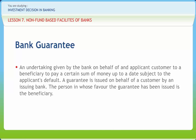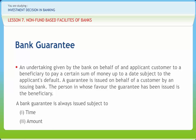A guarantee is an undertaking given by the bank on behalf of an applicant customer to a beneficiary to pay a certain sum of money up to a date subject to the applicant's default. A guarantee is issued on behalf of a customer by an issuing bank, and is a contract to perform the promise or discharge the liability of a third person in case of his default. In the ordinary course of business, the bank often issues guarantees on behalf of its customers in favor of third parties. A bank guarantee is always issued subject to a time and amount limit, and is broadly classified as performance and financial guarantee. Guarantees are generally issued to government departments for fulfillment of contracts for supply of goods, rendering services, or in lieu of security deposit or tender money.